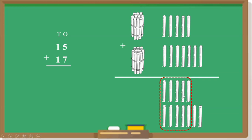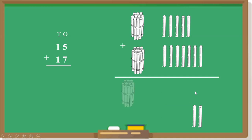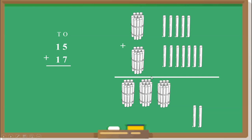Now I move this bundle from the 1's place over to the 10's place, because at the 1's place we cannot write two numbers. So we move that bundle of 10 sticks to join the other bundles. We now have 3 bundles — that is 3 tens — and 2 loose sticks remaining.